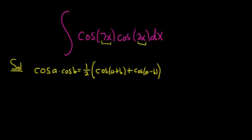In this particular problem, a is 7x and b is 2x. So plugging everything in, we have cosine of 7x, cosine of 2x. That's equal to one-half parentheses.